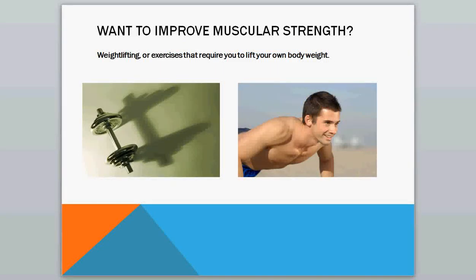So last time we talked about all the different components of fitness, so I'm going to run through all those and give you some examples of activities that will improve those. So if you want to improve your muscular strength, you can do weight lifting, or another example of exercises that require you to lift your body weight, like push-ups or pull-ups.